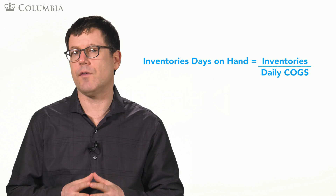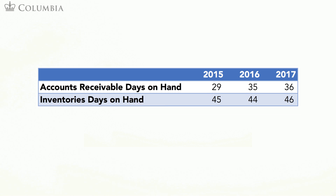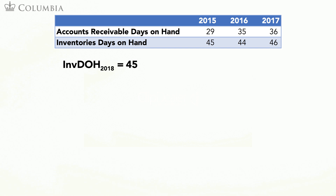Here is the formal definition. And this table shows you the historical values for this ratio for MANOA. As you can see, this ratio has been fairly constant and so we will use its average of 45.